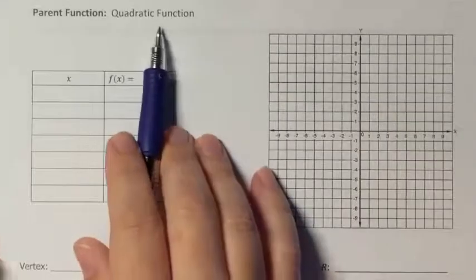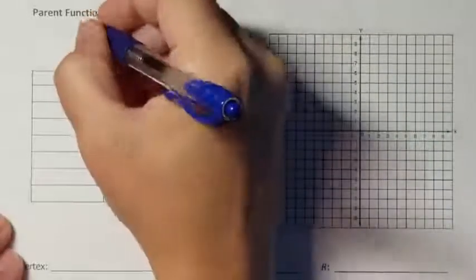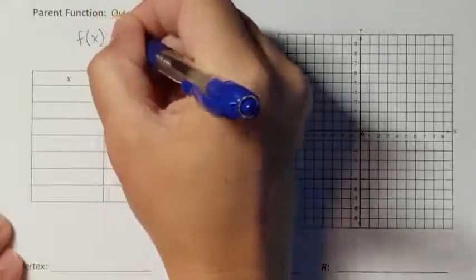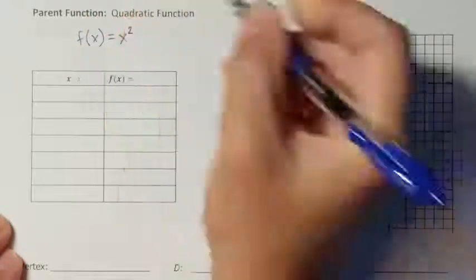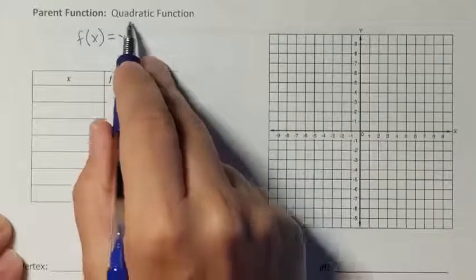Today's parent function is the quadratic function, and that looks like f of x equals x squared. The x is always squared and there is nothing else around it.